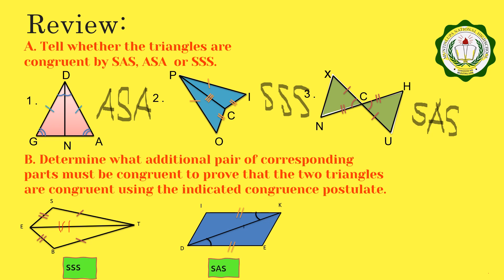For the next figure, it is also indicated as SSS congruence postulate. Based on the given figure, the congruent parts are segment IK congruent to segment ED, and angle IKD congruent to angle EDK. What we need is another pair of congruent sides: segment DK congruent to segment DK. Having segment DK congruent to segment DK, we can now say that these two triangles are congruent under SSS congruence postulate.